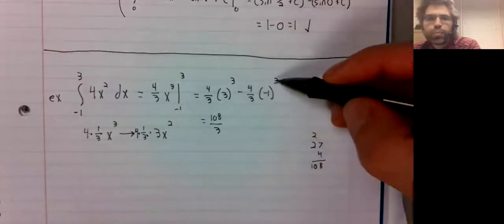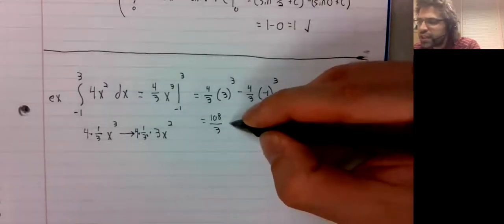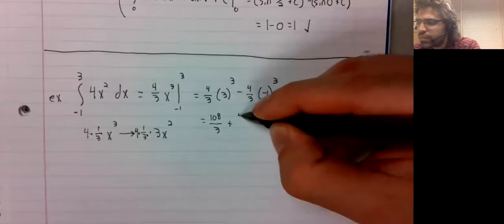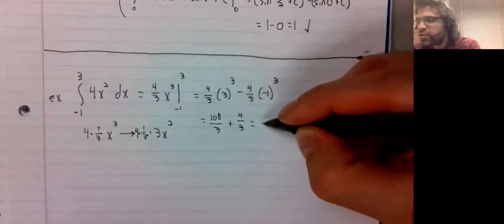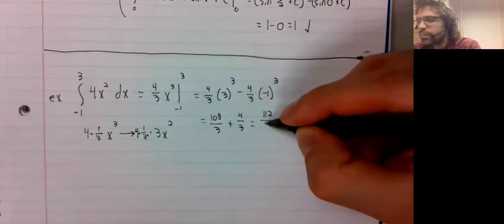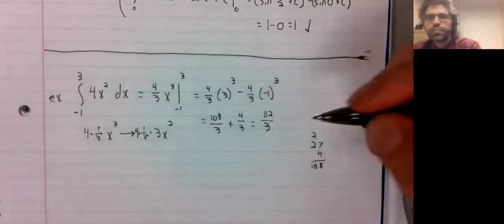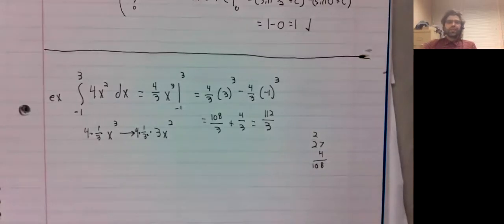Negative one cubed is negative one. So our negative signs cancel. And we get that.